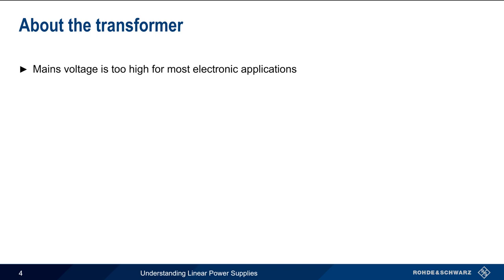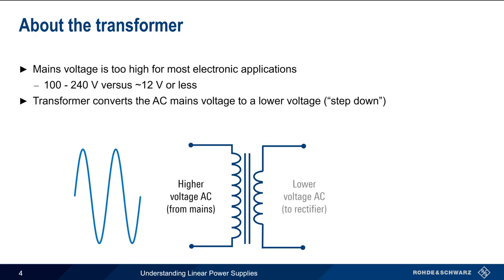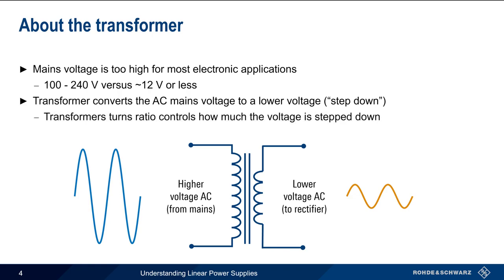Mains voltage is usually much too high for most electronic applications. Depending on geography, standard AC mains voltage is between 100 and 240 volts, whereas most electronic applications require voltages of 12 volts or less. Therefore, the first stage in a linear power supply is a transformer which steps down the AC mains voltage to lower voltage AC. The ratio of the number of windings or turns on each side of the transformer determines how much the voltage is stepped down.